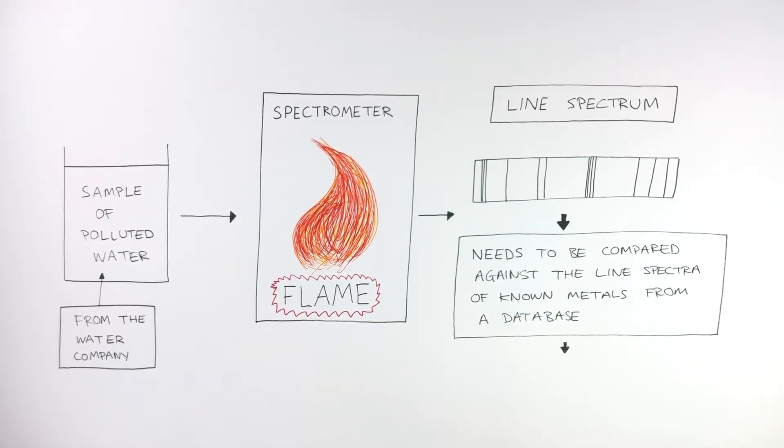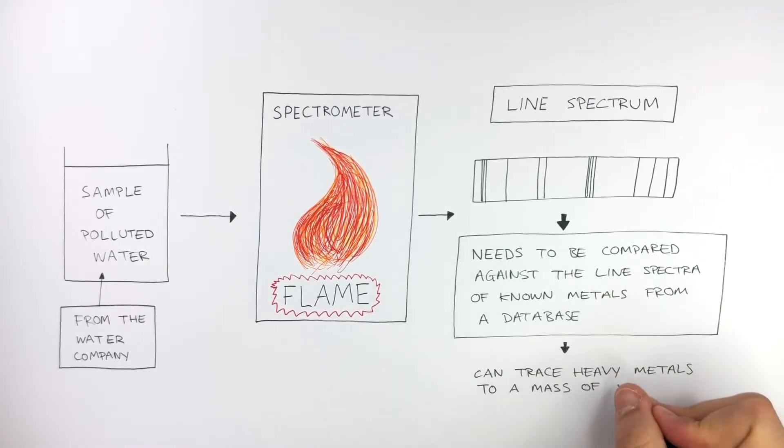Flame Emission Spectroscopy can trace heavy metals to a mass of 1.0 times 10 to the power of minus 9 grams.